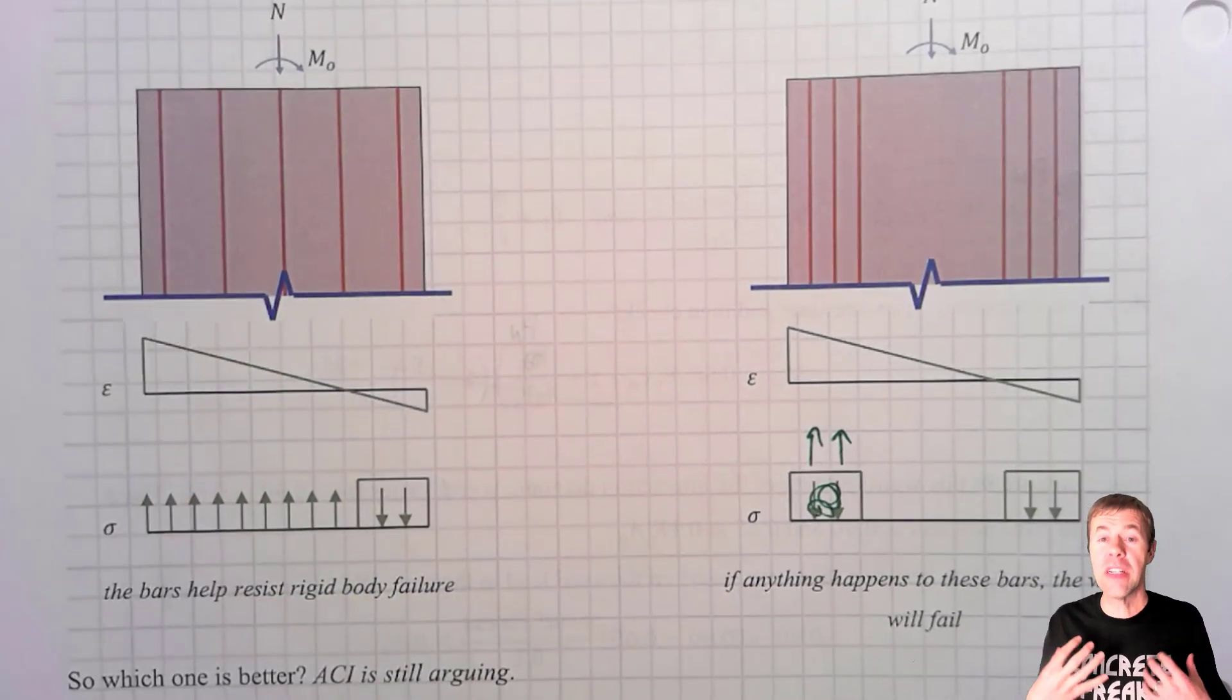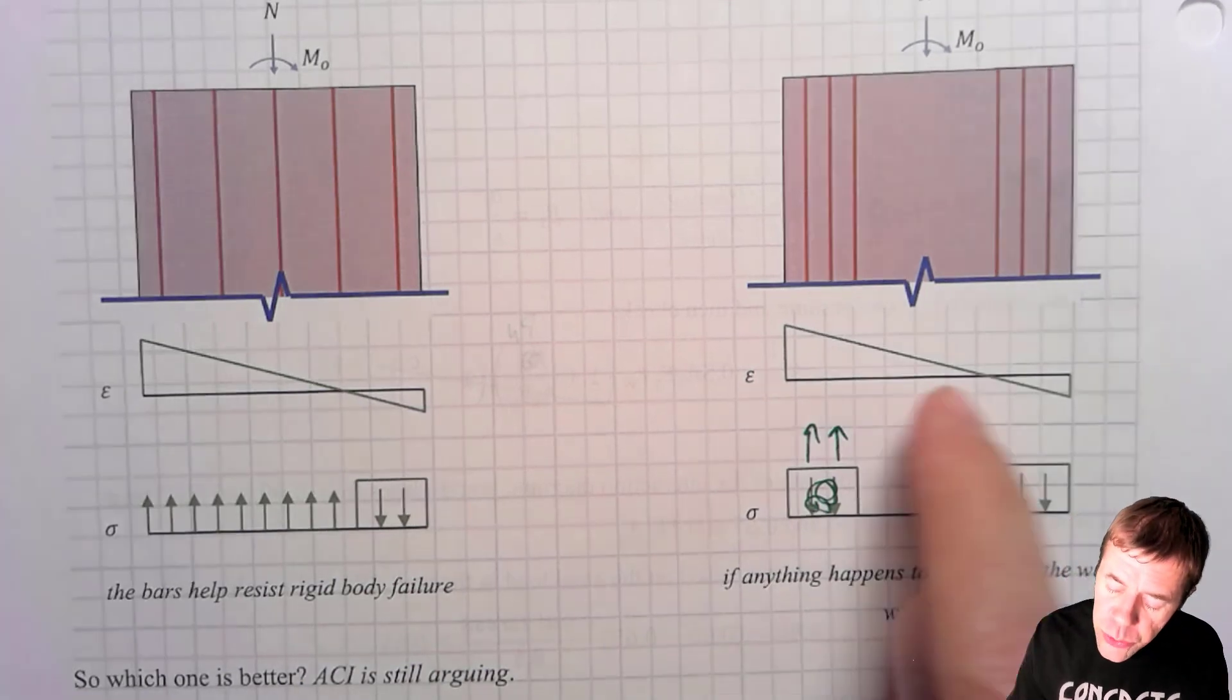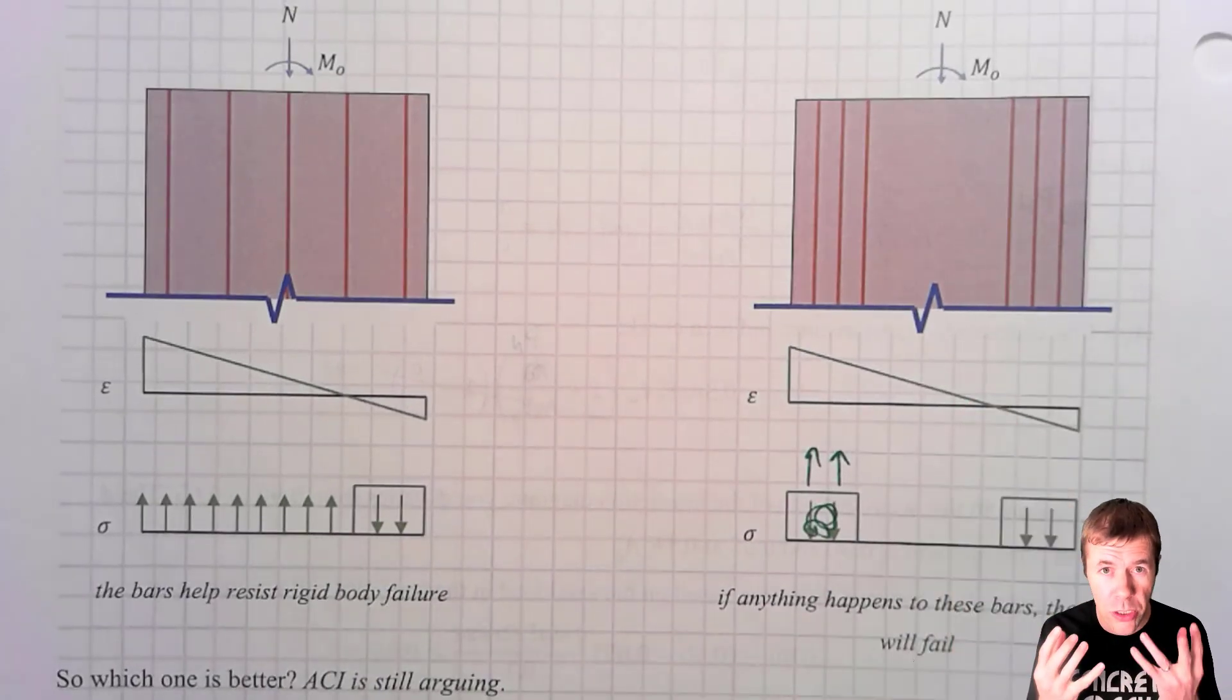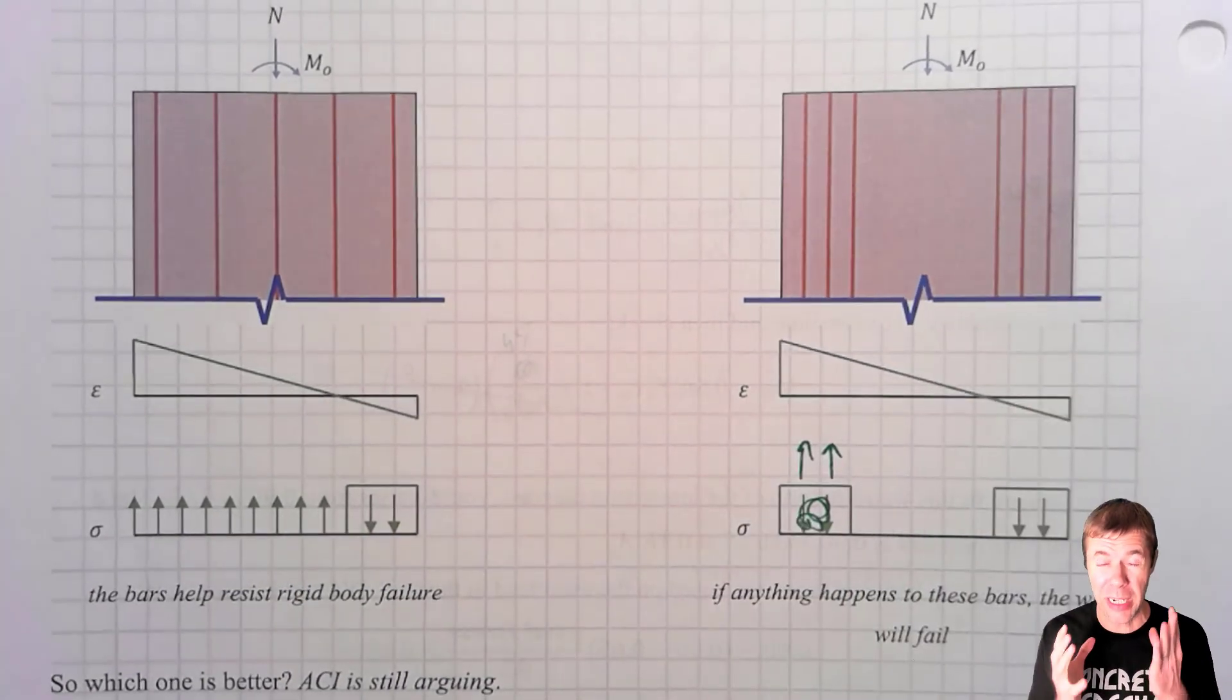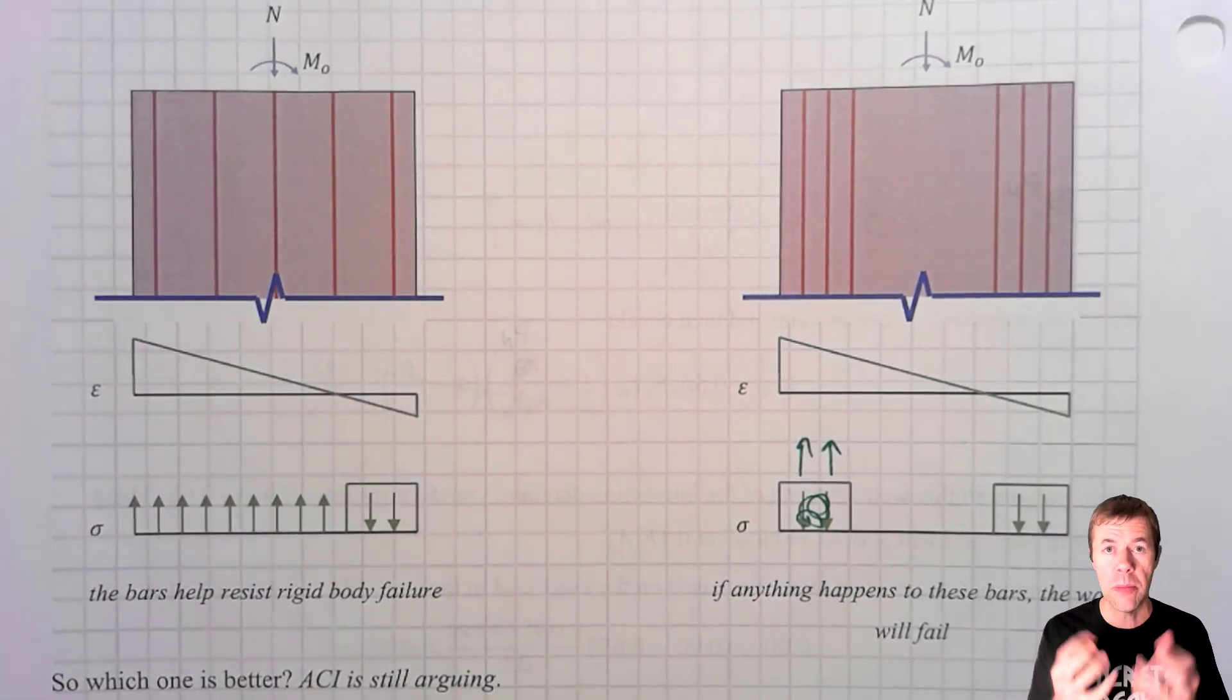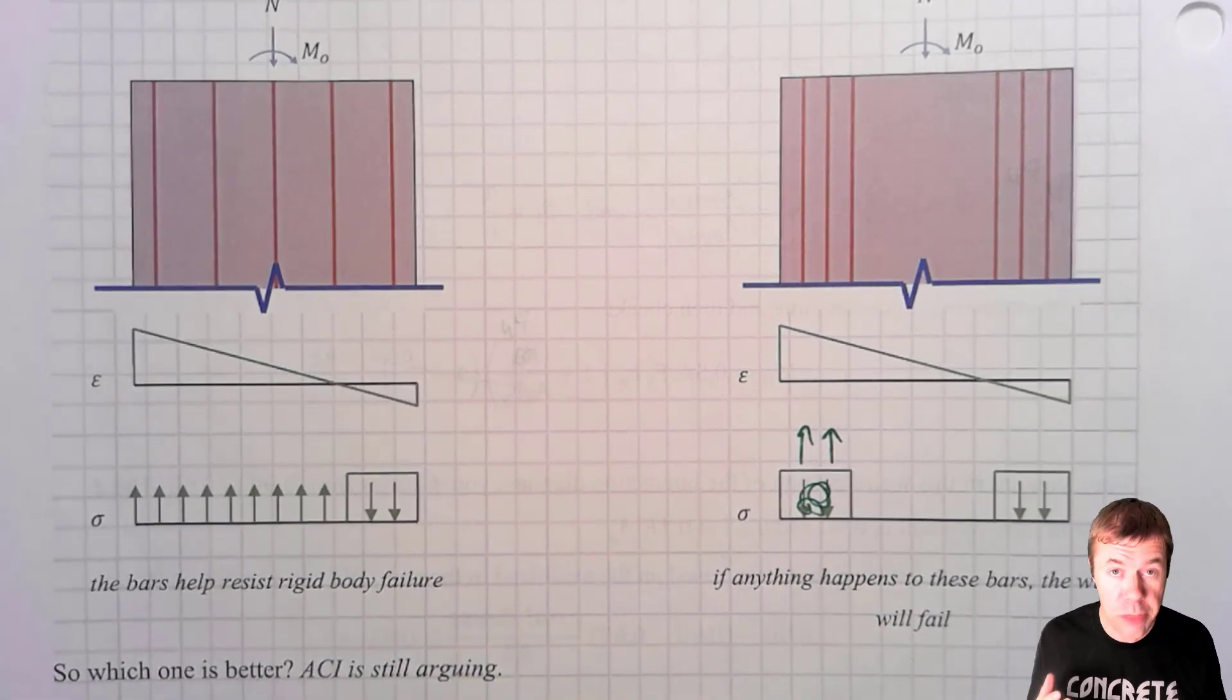And this is the one that actually I feel the most confident with and the one that I would recommend you use. Now, you can do things like this where you cluster steel at the edges. And some people might say, isn't that more efficient? Doesn't that make more sense? Isn't that what we do in beams? But if something happened to either one of these parts of the structure, it would be in big danger. But something like this, you distribute your steel throughout, you're going to have much less of a chance of this extreme event taking out your actual wall. And ACI is still arguing about which one is better.